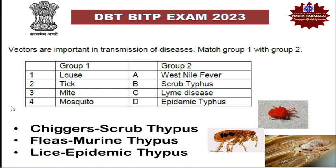Next: vectors are important in the transmission of diseases — match group 1 with group 2. Definitely one question will come from this topic. Typhus is classed into three types: chiggers, which is a mite species, are responsible for causing scrub typhus; fleas are responsible for causing murine typhus; and lice are responsible for causing epidemic typhus. The louse — singular form of lice — will transmit epidemic typhus.